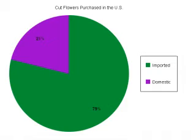The pie chart shows us the percentage of flowers that come from imported sources and domestic sources. You'll want to look on the right-hand side of the graph to see the legend showing imported and domestic cut flowers. You'll notice that the majority of flowers are imported versus the minority which are produced here for sale in our market.